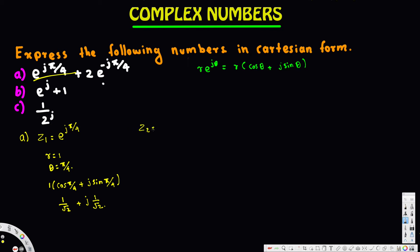Now let's look at the second one. Let's call this z2, which is equal to 2e to the power negative j times 5π/4. From this we can see that r is equal to 2 and the angle theta is equal to negative 5π/4.